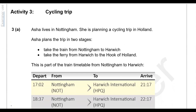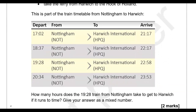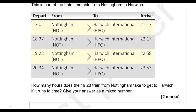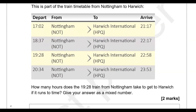Activity 3: Cycling trip. Asha lives in Nottingham and is planning a cycling trip in Holland. She plans the trip in two stages: take the train from Nottingham to Harwich, then take the ferry from Harwich to the Hook of Holland. This is part of the train timetable from Nottingham to Harwich.